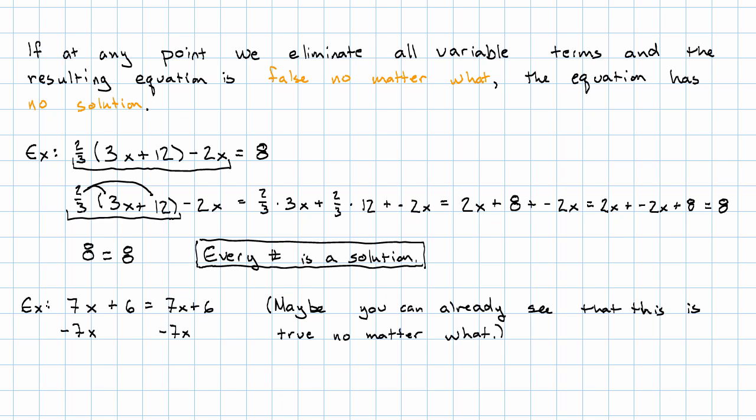Add a negative 7x to both sides. And you notice that that cancels on the right as well. And you're left with 6 equals 6.